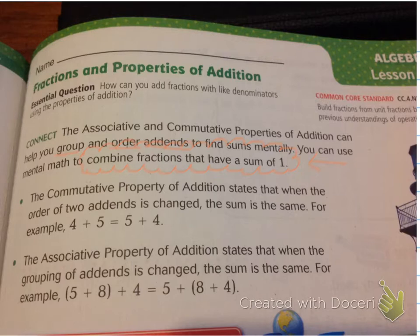The commutative property of addition states that when the order of two addends is changed, the sum is the same. For example, four plus five is equal to five plus four — they just changed the order. So when I think of commutative property, I think of order.